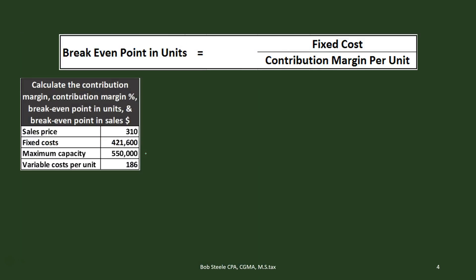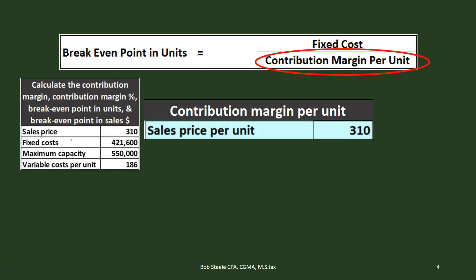The first formula is the break-even point in units, which is fixed cost — things like rent that don't change — divided by the contribution margin per unit. The first thing we need to know is what is the contribution margin per unit. We'll look at the data showing the sales price, the fixed cost, the maximum capacity, and the variable costs per unit. We're going to use that information to calculate the break-even point in units, starting by calculating the contribution margin per unit. We take the sales price per unit — in this case $310 per unit.